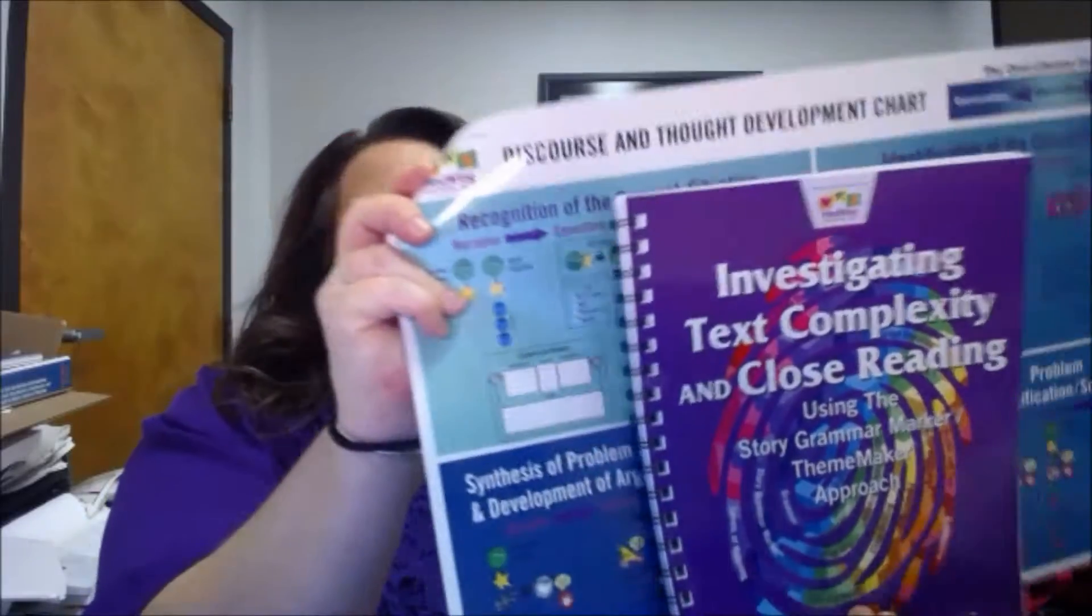Investigating Text Complexity and Close Reading Using Story Grammar Marker and Theme Maker Approaches is our newest tool. It comes with this double-sided Discourse and Thought Development chart, which I'm going to talk about in a second. This tool, if you've been using Story Grammar Marker, is a must-have. Today only, on the last day of our holiday countdown deal of the day, you can get this tool for $22.48—that's half price. It's an incredible deal, enjoy it and have a wonderful holiday season.